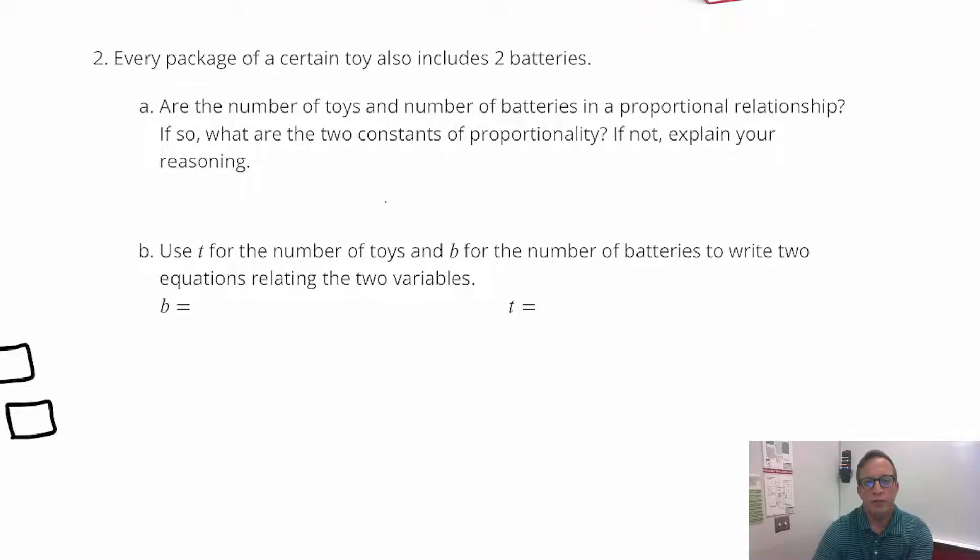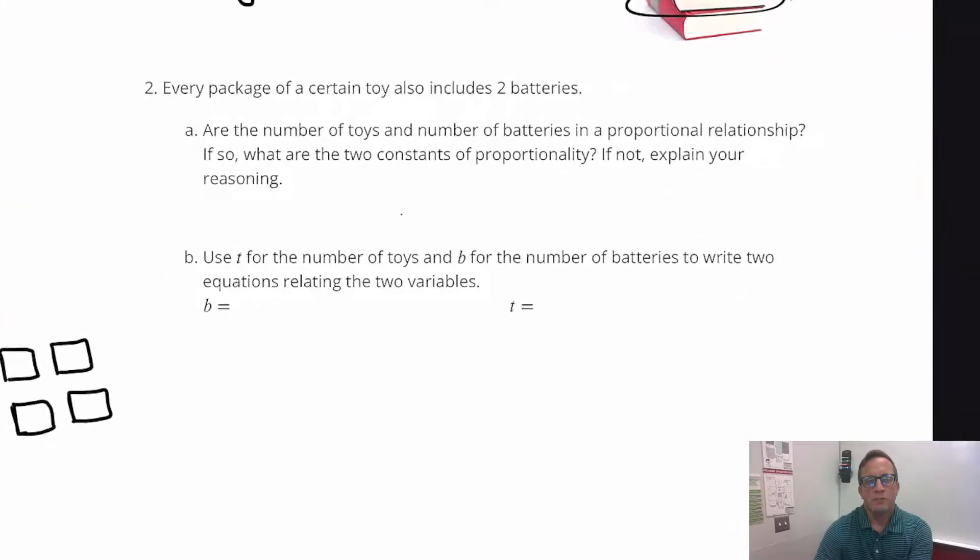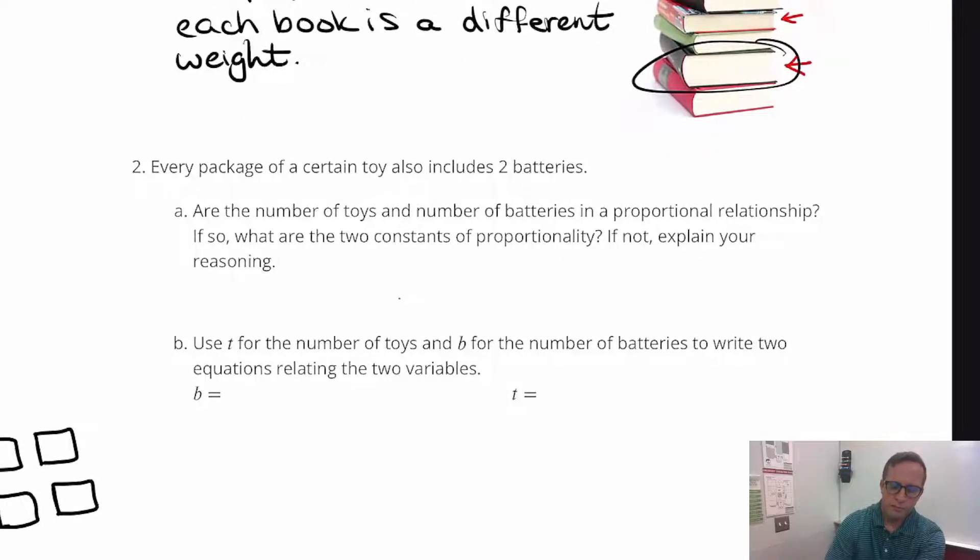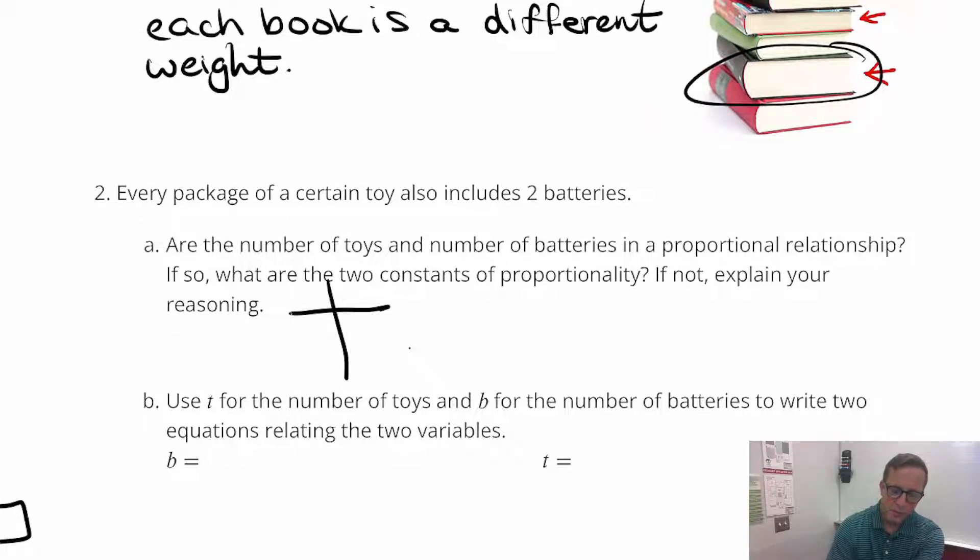Number two, every package of a certain toy also contains two batteries. So for question A, are the number of toys and the number of batteries in a proportional relationship? If so, what are the two constants of proportionality? Well, I mean, we could have a really simple table here. We could have a table where we have batteries, B, and we have toys. We can also have a table, because there's no saying what way the table has to go. Put toys where the X is. I could put batteries where the Y is.